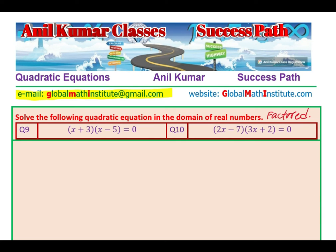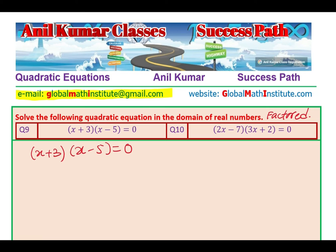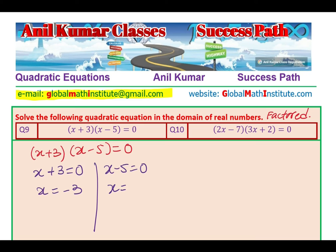We have the equation (x plus 3) times (x minus 5) equals 0. When you are multiplying two numbers and getting 0, it means that either one of them could be 0, which leads to two possible solutions. So x plus 3 equals 0 gives x equals minus 3, or x minus 5 equals 0 gives x equals 5. We have two solutions: x equals minus 3 or 5.